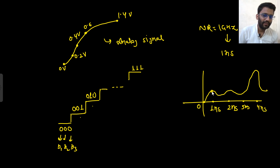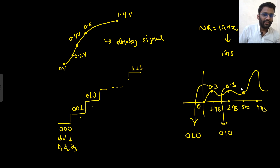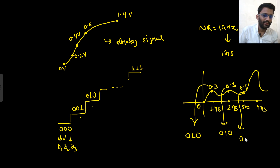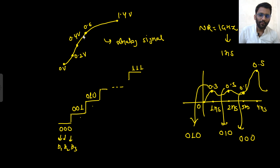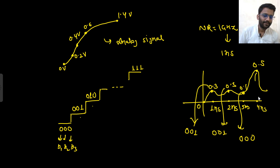At 1 ns, let's say the sampled value is 0.3 V. Since 0.3 V falls between 0.2 and 0.4 V, it maps to 001. At 2 ns, assume the value is 0.3 V again — output is 001. At 3 ns, assume value is 0.1 V; since 0 to 0.2 V maps to 000, output is 000. At 4 ns, assume value is 0.5 V; 0.4 to 0.6 V maps to 010, so output is 010.